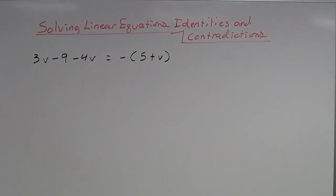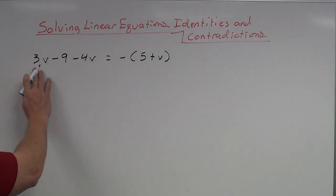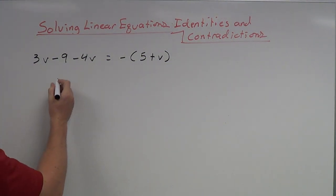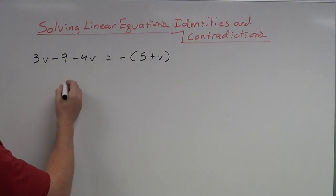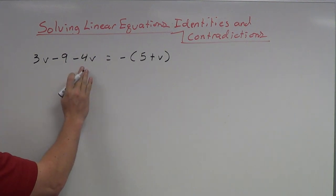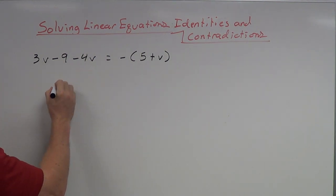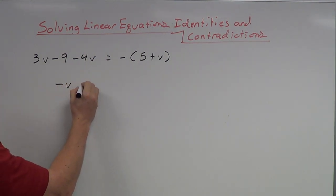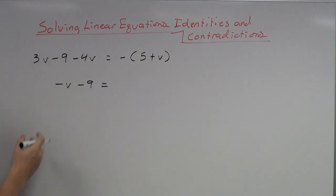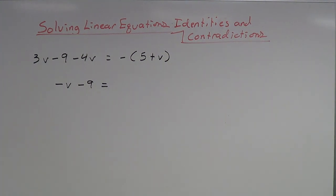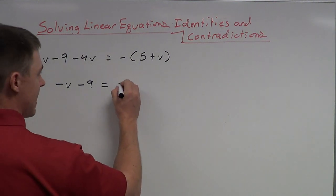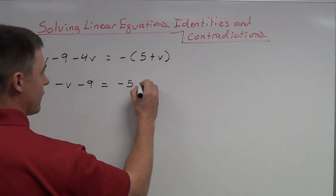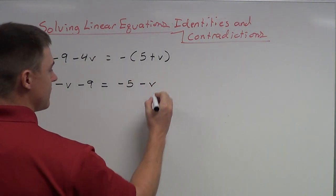I'm going to start solving this. First thing on the left, I see that I've got v's here, so I'm going to collect them together. Positive 3 and negative 4 makes a negative 1v — notice I don't put the 1 there, I just leave this as negative v. The 1 is kind of redundant. And on the right side, I'm going to distribute that negative, which makes negative 5 minus v.